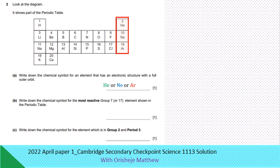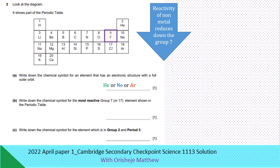Write down the chemical symbol for the most reactive Group 7 element in the periodic table. We are talking about Group 7 elements — the most reactive is fluorine, then chlorine. The reactivity of non-metals reduces down the group, so non-metals at the top of the periodic table are more reactive compared to those at the bottom.